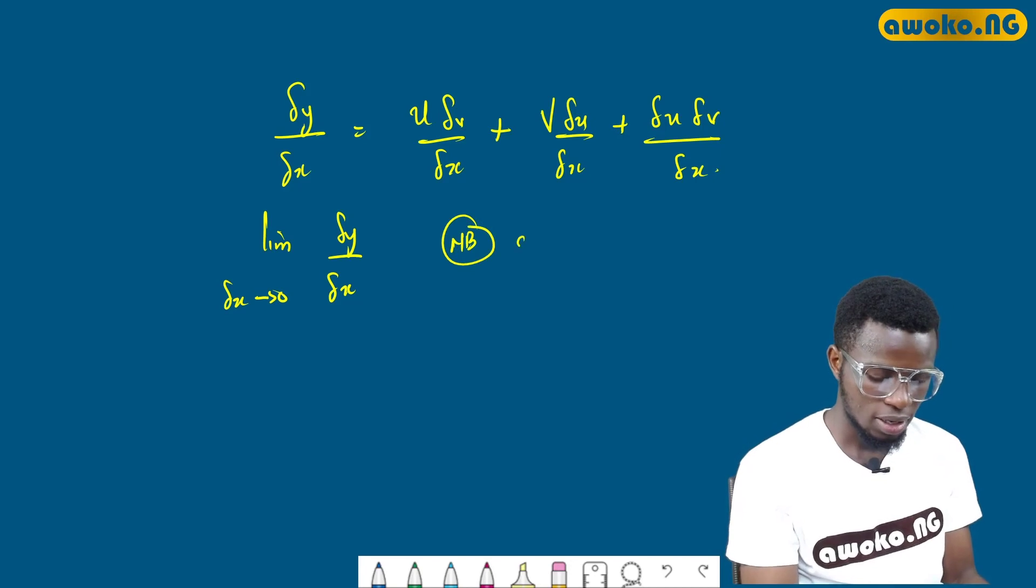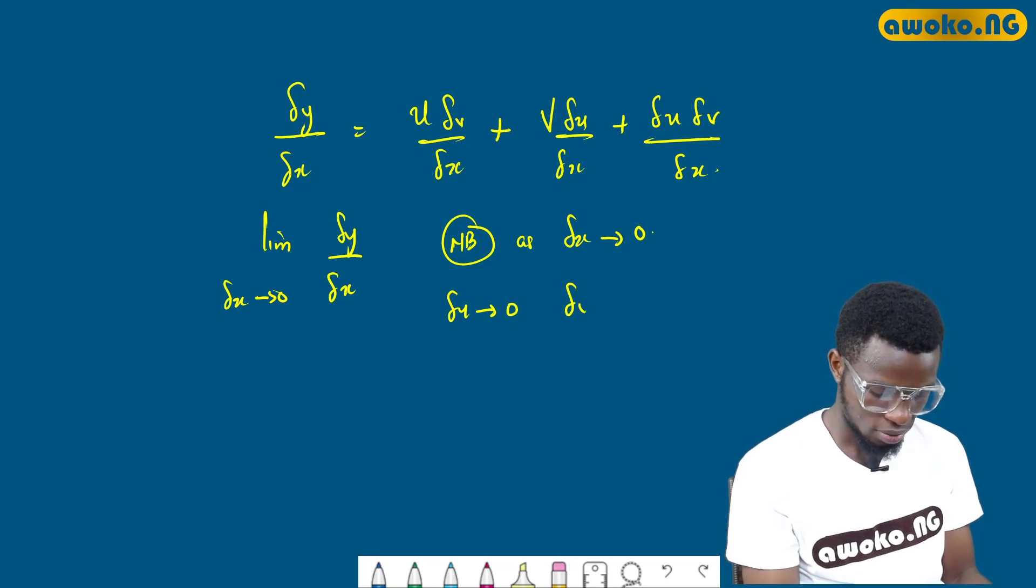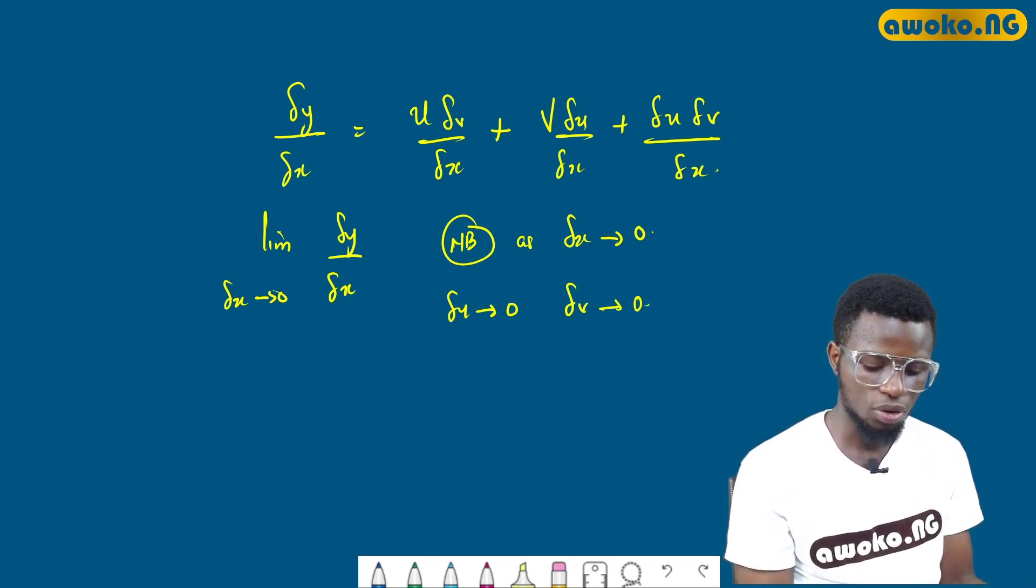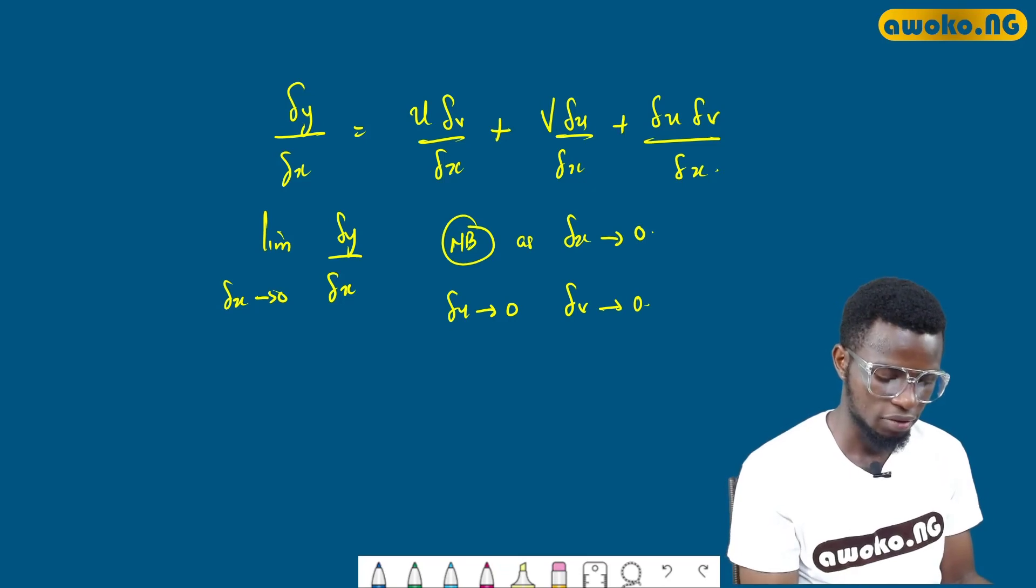And of course, note that as dx tends to zero, du tends to zero, dv tends to zero. So if we have this, we have that.